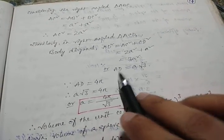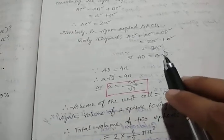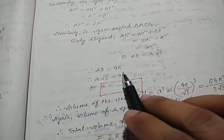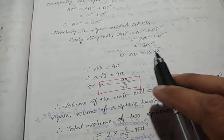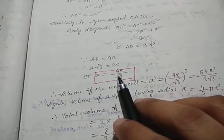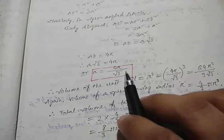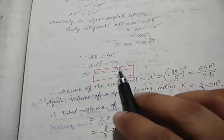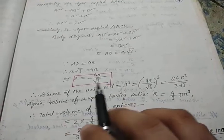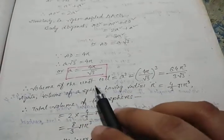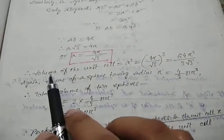Therefore AD equals a root 3. We already discussed AD equals 4R. So a root 3 equals 4R. This gives us a equals 4R divided by root 3.